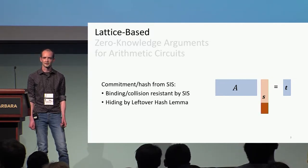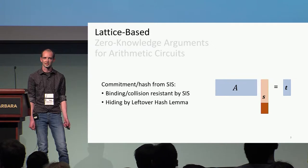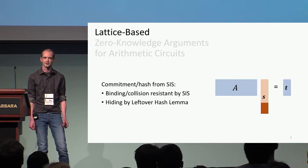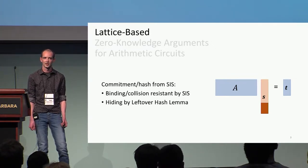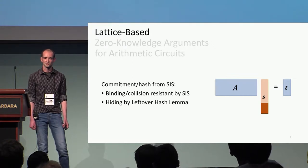We're going to make use of the SIS problem to create a hash function or commitment scheme where we just apply the public SIS matrix to a vector S in order to hash it or commit to it. If the SIS problem is hard to solve, this gives us a binding commitment scheme or a collision-resistant hash. This also gives us a hiding commitment scheme by the leftover hash lemma if we choose the last part of our message randomly from some distribution with enough entropy.